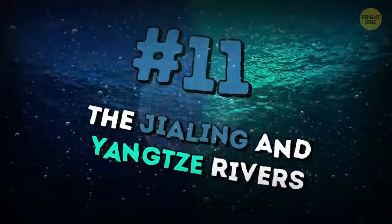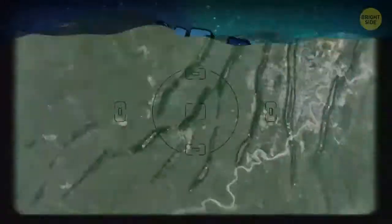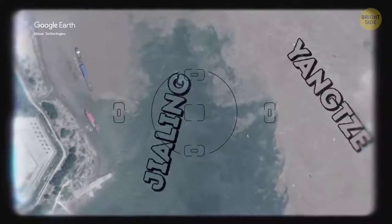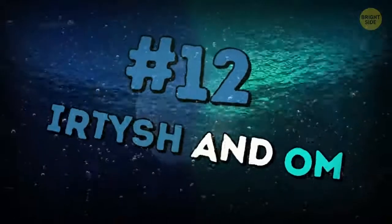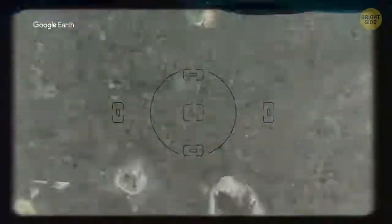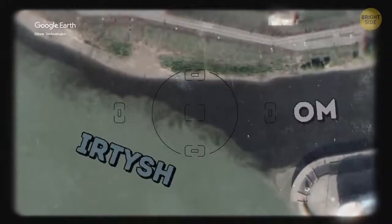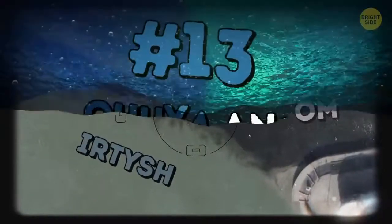11. The Jialing and Yangtze rivers meet in Chongqing, China. The Jialing is clean and the Yangtze is brown. 12. Irtysh and Om. These two rivers flow into each other in Omsk, Russia. The Irtysh is cloudy and the Om, pure and transparent.